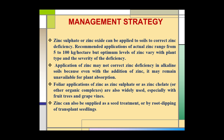Management strategy — how we can control zinc deficiency in plants: zinc sulfate or zinc oxide can be applied to soil to correct zinc deficiency. The recommended application of actual zinc ranges from 5 to 100 kg per hectare, though optimum levels vary with plant type and severity of deficiency. Application of zinc may not correct deficiency in alkaline soils as zinc may remain unavailable for plant absorption. Foliar application of zinc as zinc sulphate or zinc chelate is also widely used, especially with fruit trees and grapevines. Zinc can also be applied as a seed treatment or by root dipping of transplant seedlings.